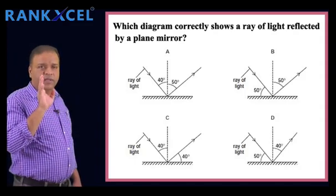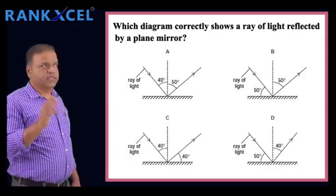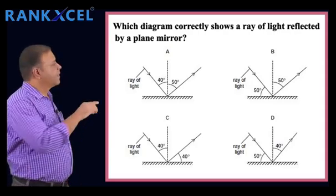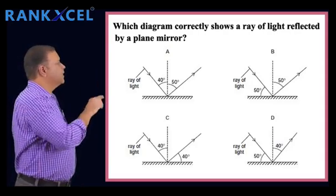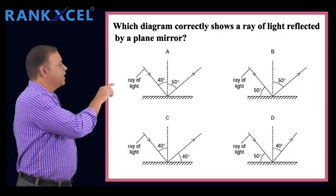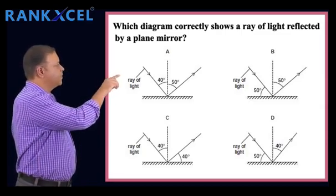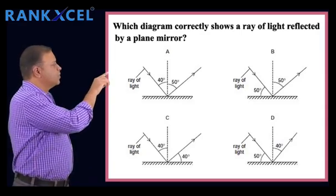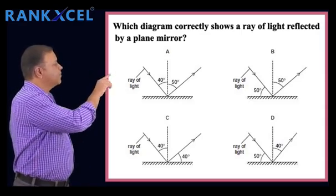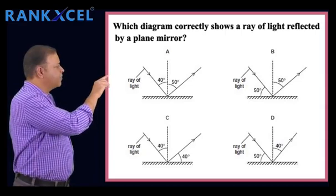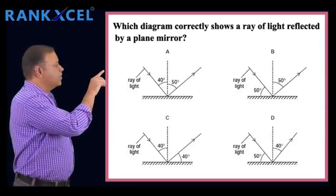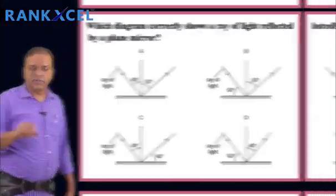You should know the law of reflection, which states that the angle of incidence is equal to the angle of reflection. If you look at option D, the dotted line is the normal which is perpendicular to the surface of the plane mirror. One angle given is 50 degrees and the remaining angle is 40 degrees. Hence, according to the law of reflection, option D is the correct option.